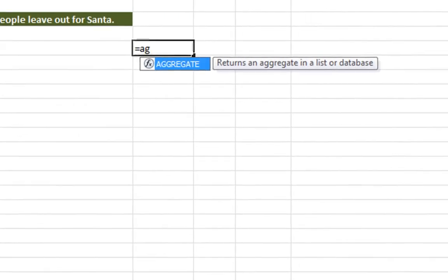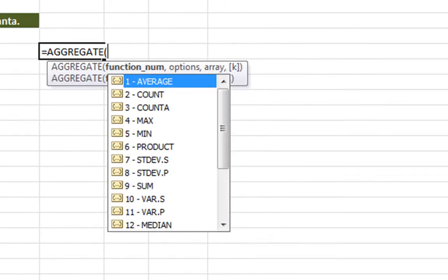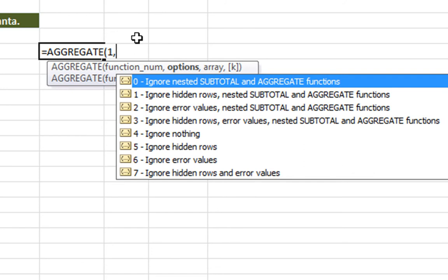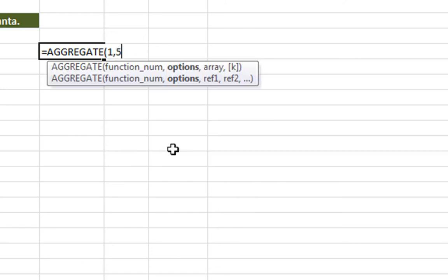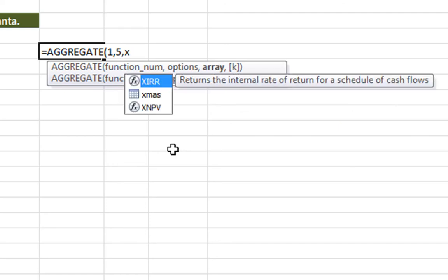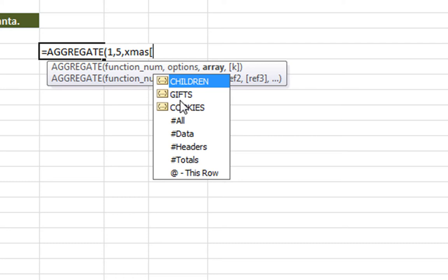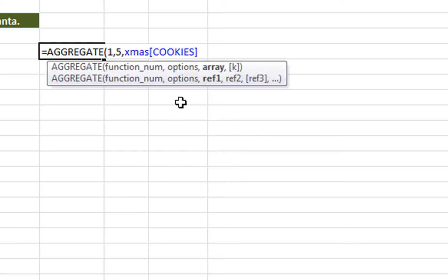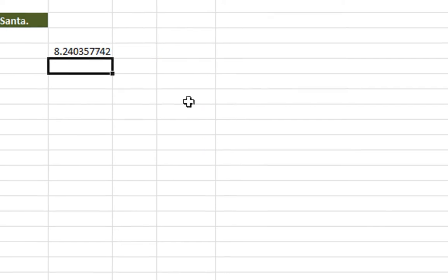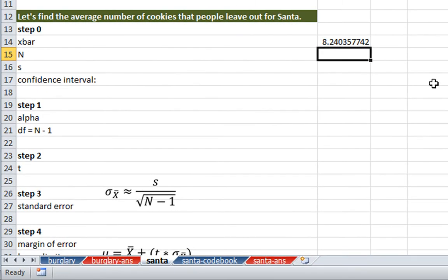If you recall from the previous video, when we want to incorporate a mean but we want to exclude missing values, we have to use the aggregate function. We're looking for the average, which is the first one. We want to ignore hidden rows, five. Our data was the Xmas table and the variable was cookies. There is our average number of cookies left out for Santa.